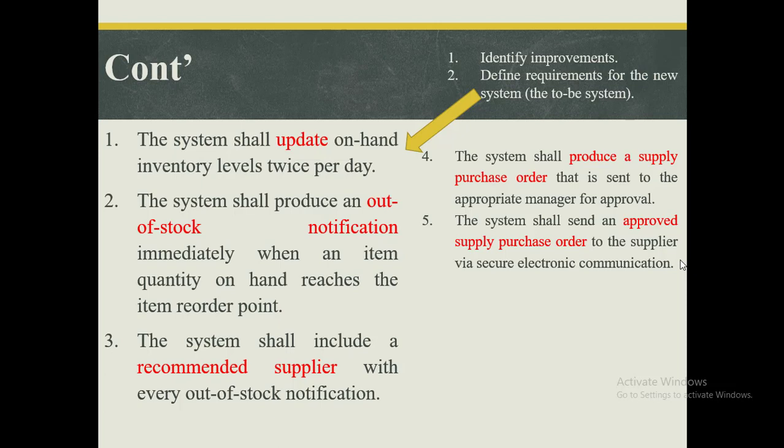We also want the system to have a recommended supplier so that there are no delays in identifying who can bring the items. Instead of worrying about approvals, we want the system to produce a supply purchase order that is automatically sent to the manager for approval. The system should then send the approved purchase order to the supplier via electronic communication, such as email, and so on.